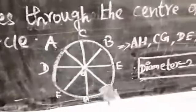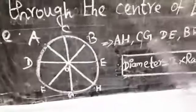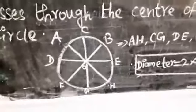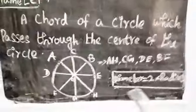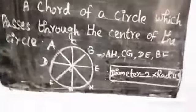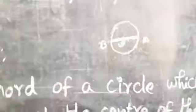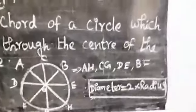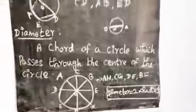Now look here — one circle. The line through the center is the diameter. From the center going to one side is one radius, and going to the other side is also one radius. So two radii make up the diameter. Therefore, diameter is equal to two times the radius.